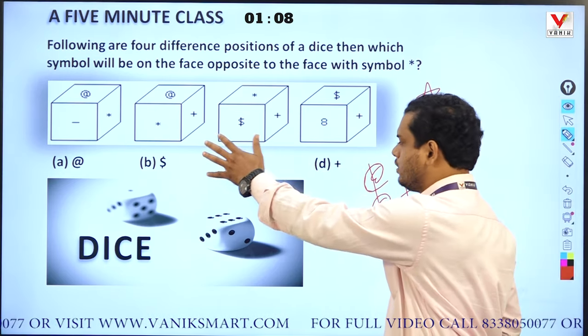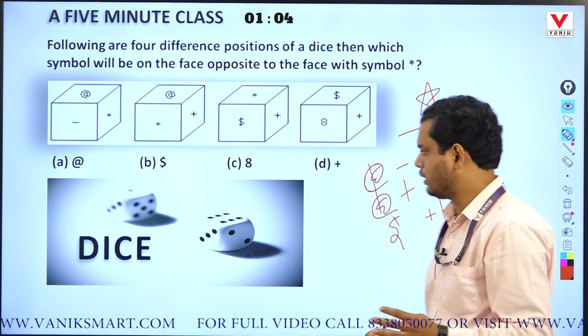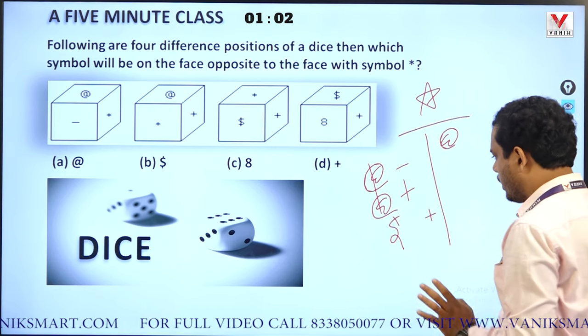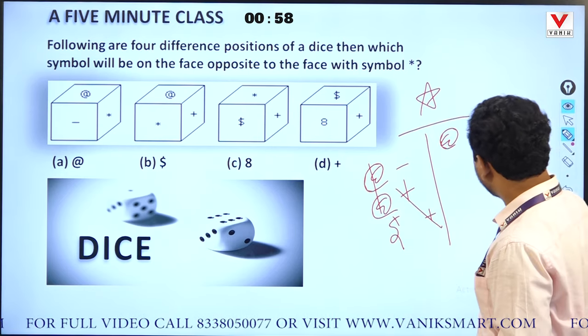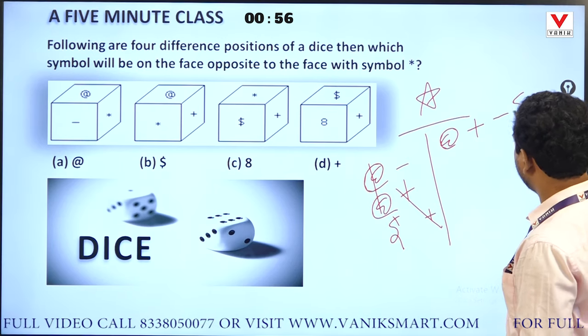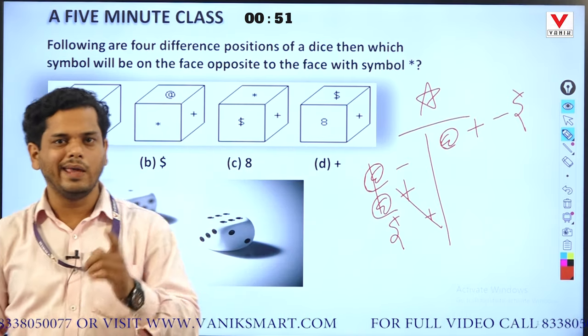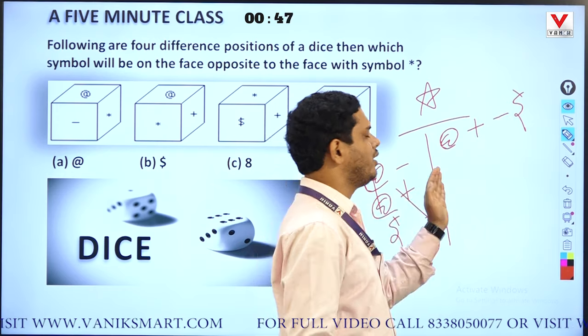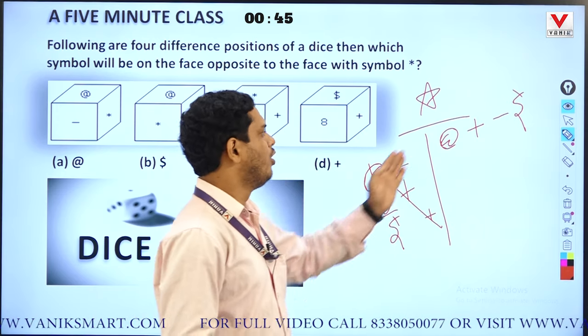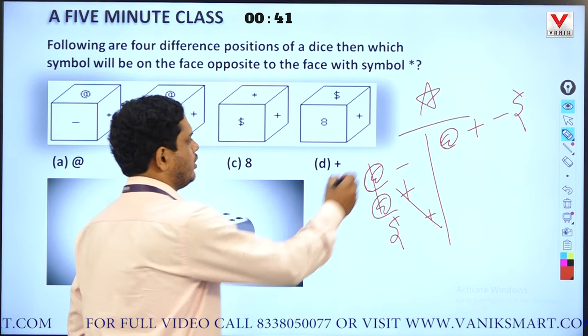Now, at-the-rate appears once but shows up twice in the diagram. Plus also appears once, and we have minus and dollar as well. One face has four adjacent faces and one opposite face. These four faces we detected here are all the adjacent faces of star. The remaining one is eight, which is sitting here. So this is the small trick.